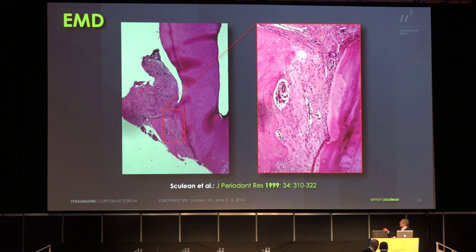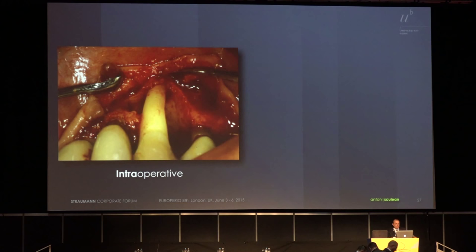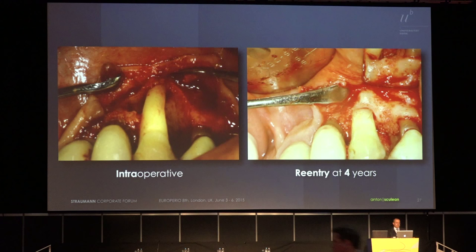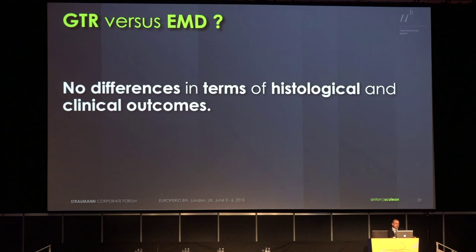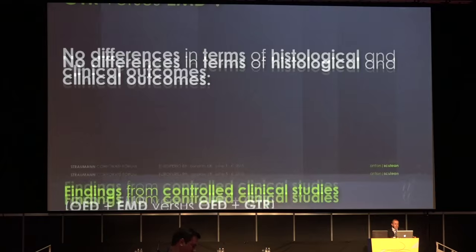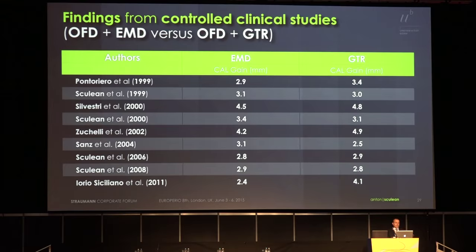Look at this clinical case treated by myself in 1997 — a huge bone defect — and this is the outcome at four years using only enamel matrix proteins: five millimeters of newly formed bone. What is now better, a membrane or enamel matrix proteins? We can say nowadays there is no difference in terms of histological or clinical outcome. In two- and three-wall defects, the outcomes are more or less the same.